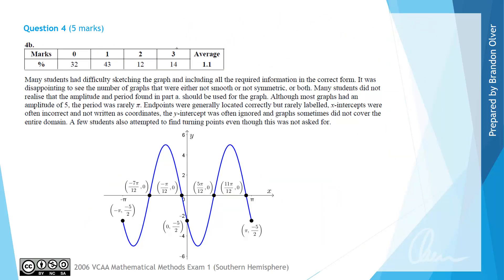From the examiner's report, only 14% of students received full marks for this part. Many students had difficulty sketching the graph and including the required information in the correct form — that is, as coordinates and exact values. It was disappointing to see graphs that were either not smooth nor symmetric. Many students did not use the amplitude and period from part a, and although most graphs had an amplitude of 5, the period of pi was rarely seen. Endpoints were generally located correctly but rarely labelled, x-intercepts were often incorrect and not written as coordinates, the y-intercept was often ignored, and the graphs sometimes did not cover the entire domain.